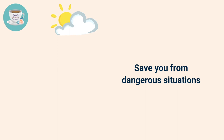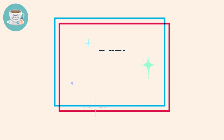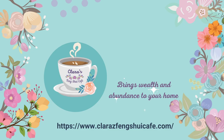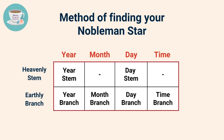So if you have your Ba Zi in front of you, I'll show you step by step how to find out if you have Tianyi Nobleman stars in your Ba Zi. The method of finding your Nobleman star is to use your year stem and day stem — the compatible elements in the earthly branches are the Nobleman stars.